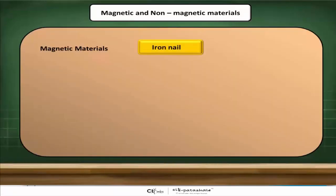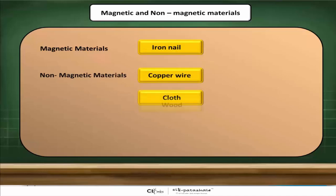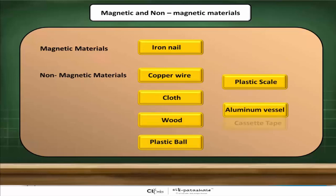The magnetic materials are iron nail. Copper wire, cloth, plastic scale, aluminium vessel, wood, plastic ball, and cassette tape are non-magnetic materials.